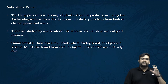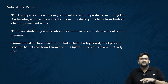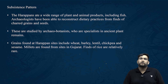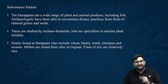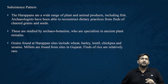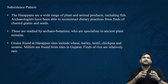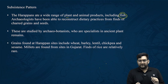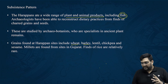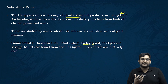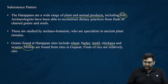The first topic within the NCERT is subsistence pattern. Agriculture is the mainstay, along with animal husbandry and hunting-gathering. Genetic analysis of diet reveals fish, animal products, plants, wheat, barley, lentil, chickpea, and sesame as evidence. Millets have also been found in Gujarat, making it a very diverse set of grains being consumed.